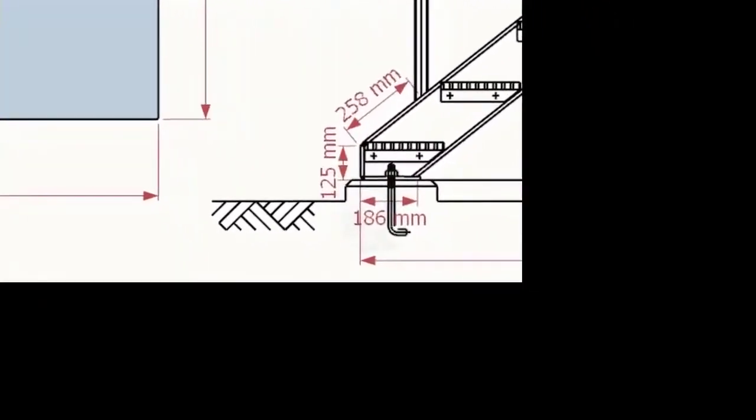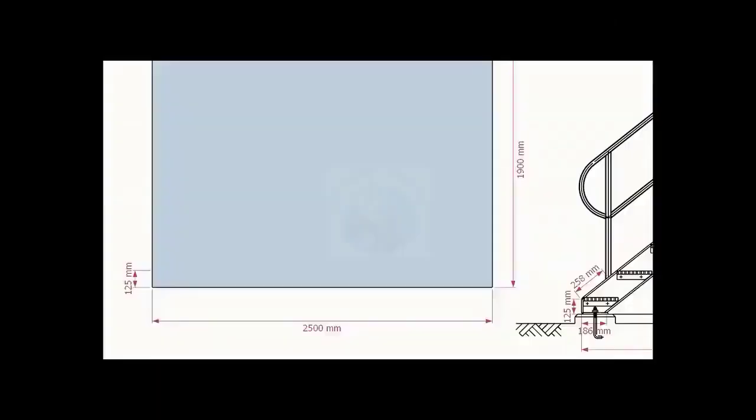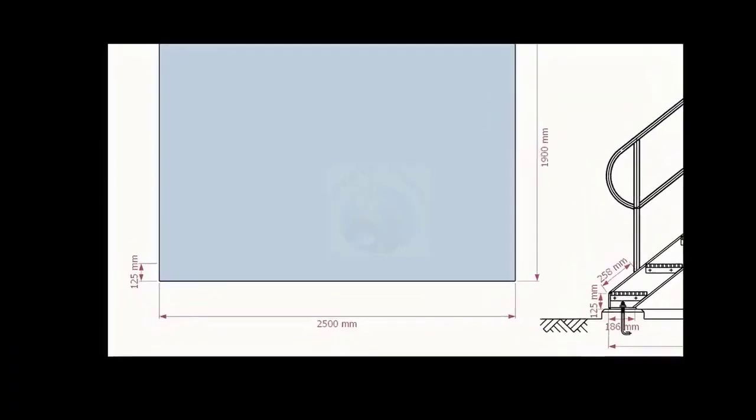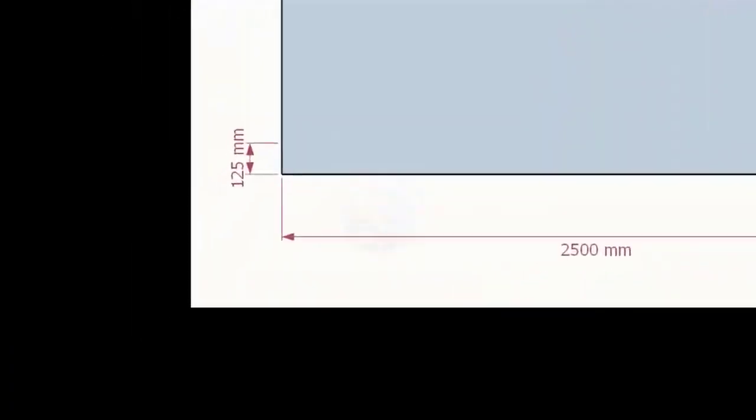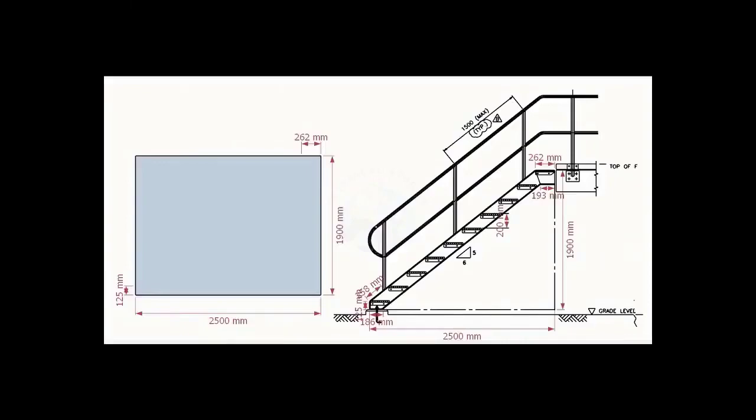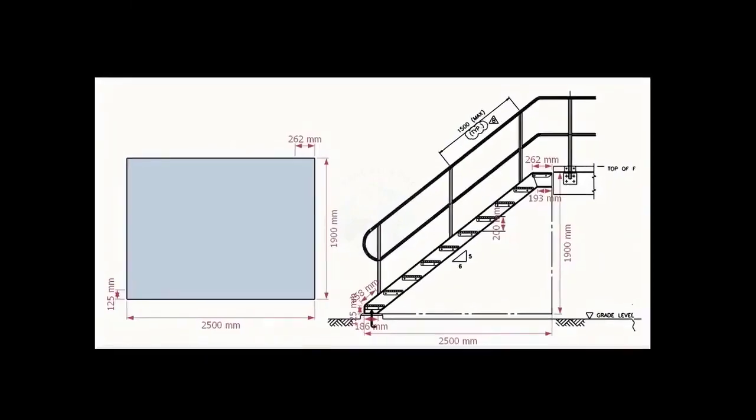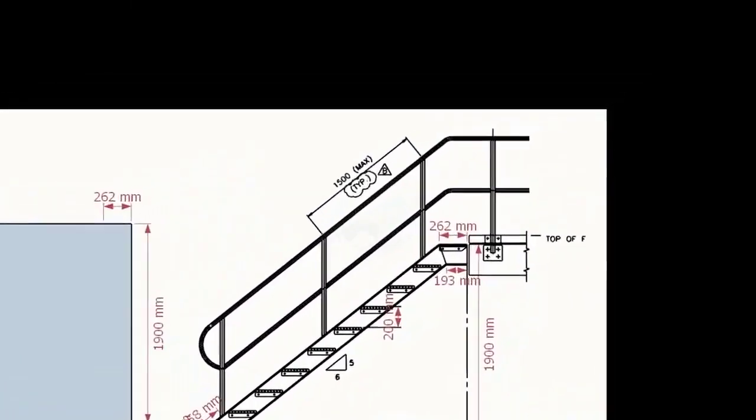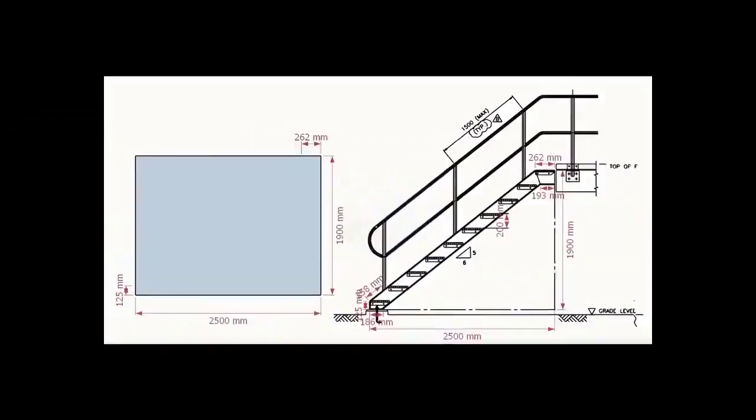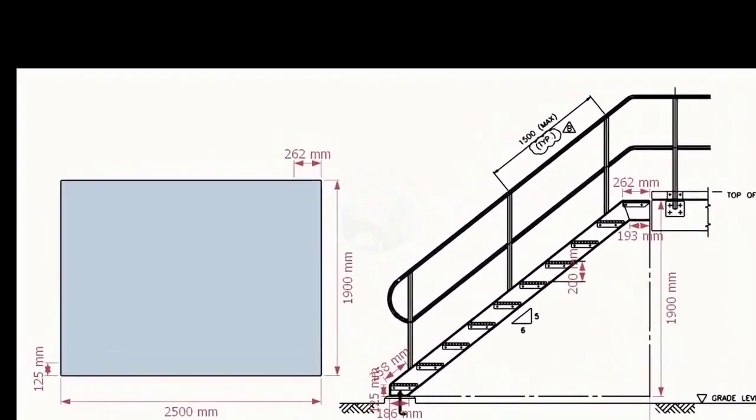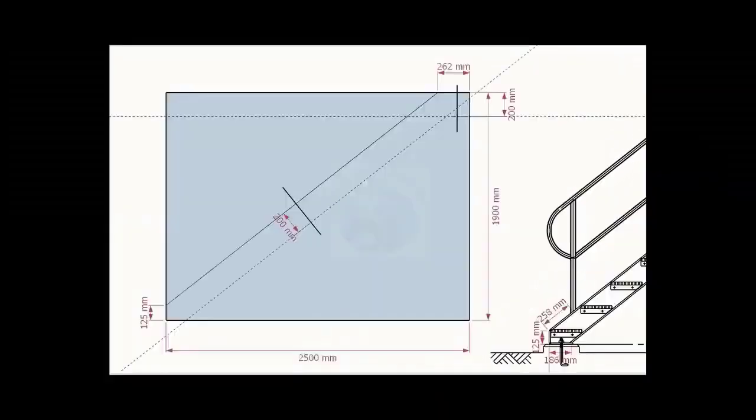Look at the bottom of the stair channel. The height of the notch is 125 millimeters. Let us mark this height on the layout. Go to the top end of the stair. Note down the dimension 262 millimeters. Mark this measurement on the top of the layout as shown.